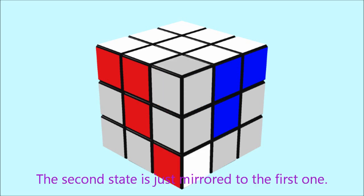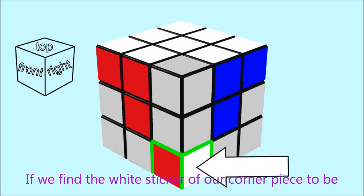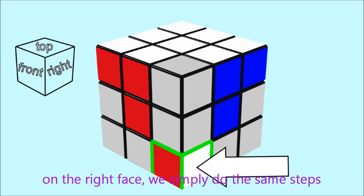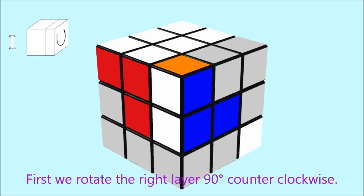The second state is just mirrored to the first one. If we find the white sticker on our corner piece to be on the right place, we simply do the same steps but mirrored. First, we rotate the right layer 90 degrees counterclockwise.